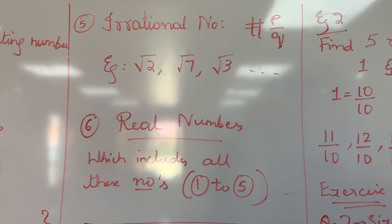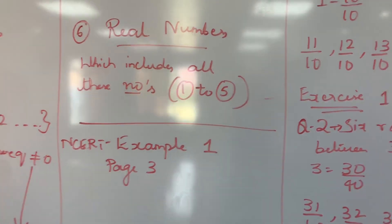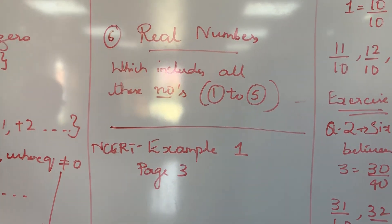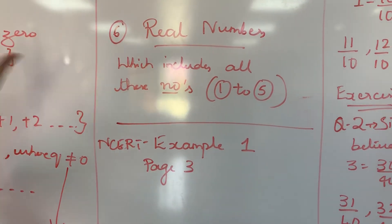Now next is real numbers. Real numbers includes all these numbers. Whatever we have done: natural number, whole number, integer, rational, irrational. All these numbers comes under real numbers.